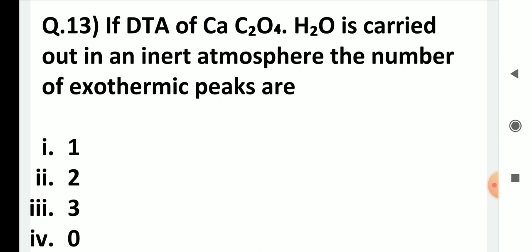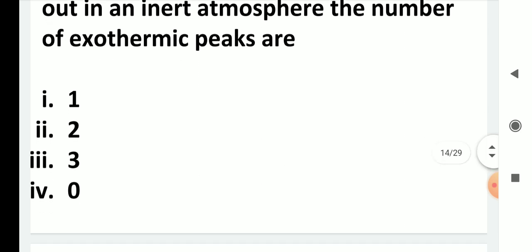If DTA of calcium oxalate monohydrate is carried out in an inert atmosphere, the number of exothermic peaks is: one, two, three, or zero? In an inert atmosphere there is no oxidation, which is the exothermic process. Heating calcium oxalate monohydrate in an inert atmosphere gives all three peaks as endothermic. So there are no exothermic peaks — the answer is zero.